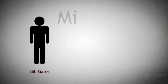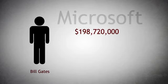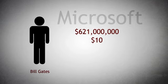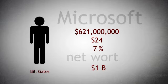One, Bill Gates, founder of Microsoft, who currently holds some 621 million shares, priced at about $24 each, or 7% of the float, with a net worth of some $5 billion — concentration risk will not diversify his wealth for him.